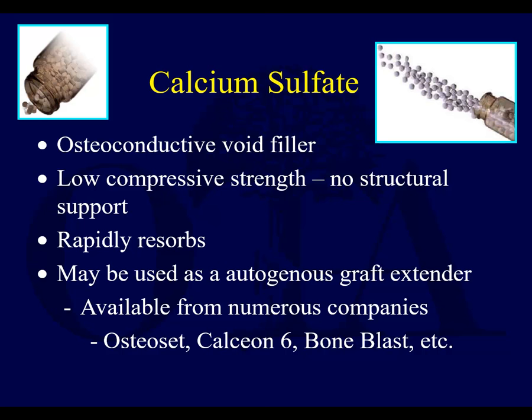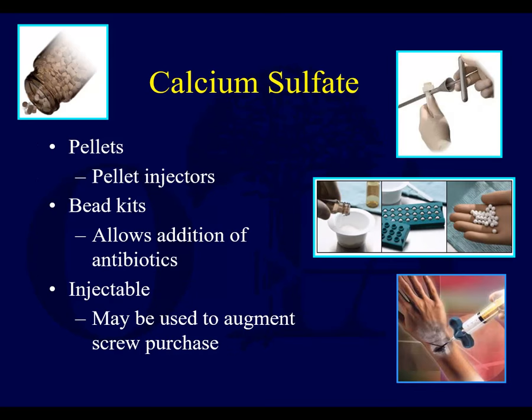Calcium sulfates are a nice osteoconductive void filler. They don't have the same compressive strength and they rapidly resorb. They can be used as an autograft extender. They can be made into beads, and you can add antibiotics to them — so if you want to make resorbable antibiotic cement beads, you can use them. You can also inject them when doing internal fixation to augment screw purchase, similar to calcium phosphates.